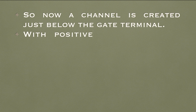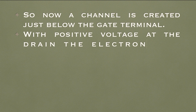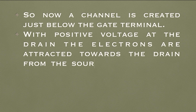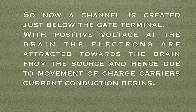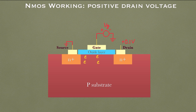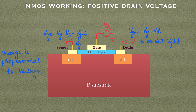Now that a channel is created just below the gate terminal, applying a positive voltage at the drain attracts electrons from the source towards the drain. This movement of charge carriers begins current conduction. For example, with 0.1 V at the drain, all electrons start moving from source to drain, causing current to flow. As drain voltage is further increased, the current increases accordingly.